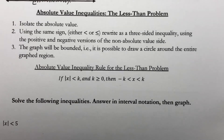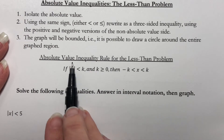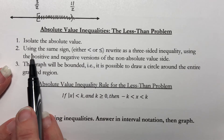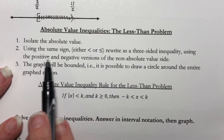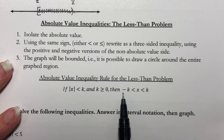In the last section, we talked about absolute value equations — we had to get our absolute value by itself, then set it equal to a positive number and a negative number. Now we are going to talk about absolute value inequalities. These are similar in that we deal with a positive and a negative. The biggest thing to recognize is the difference between the less-than problem and the greater-than problem. For the less-than problem, we want our absolute value by itself, less than a number. Then, using the same sign, we rewrite it as a three-sided inequality using the positive and negative versions of the non-absolute-value side — putting the expression between negative k and positive k.